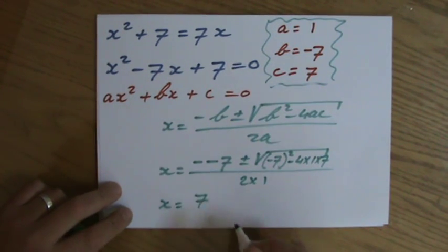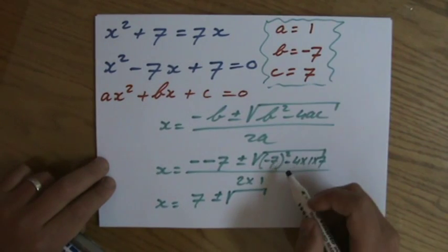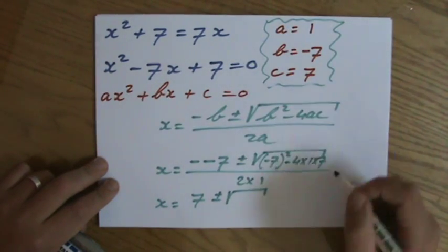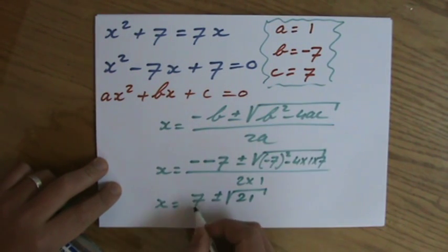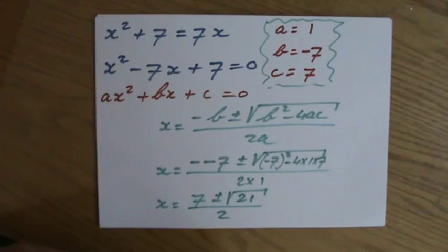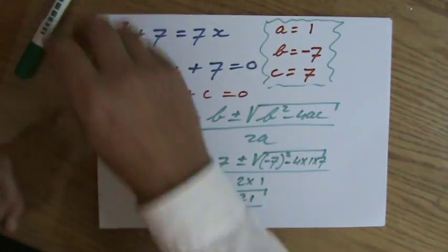Alright, 7, minus minus 7, plus or minus, let's work that out. 49 is 7², minus 28. So that's going to be 21 over 2. Alright, now I need my calculator. You see, I didn't use my calculator up till now. You don't need your calculator. But now I do.